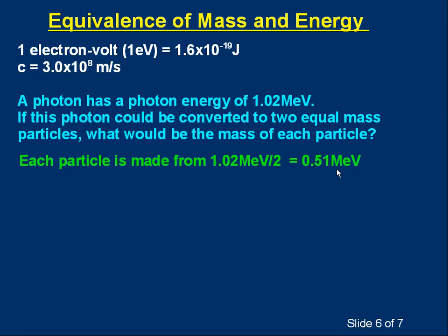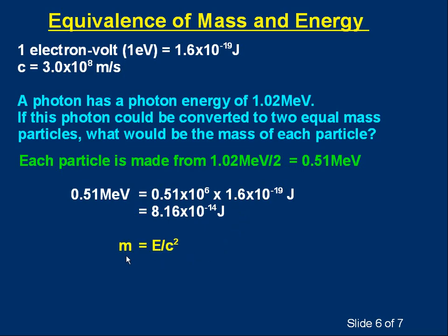So if we're going to use our equation E equals mc squared, we are going to have to convert this energy in MeV into joules. So let's do that. 0.51 MeV. Well, it's 0.51 times 10 to the 6 eV. It's 0.51 times a million electron volts, because that's what mega, capital M means. And to convert that number of electron volts to joules, we're going to have to multiply by 1.6 times 10 to the minus 19. And if you do that, you'll end up with 8.16 times 10 to the minus 14 joules. That's the amount of energy in joules that makes up one of the particles. And now we can use this formula, rearranged E equals mc squared. M is E over c squared, 8.16 times 10 to the minus 14 over 3 times 10 to the 8 squared, should give you 9.1 times 10 to the minus 31 kilograms.